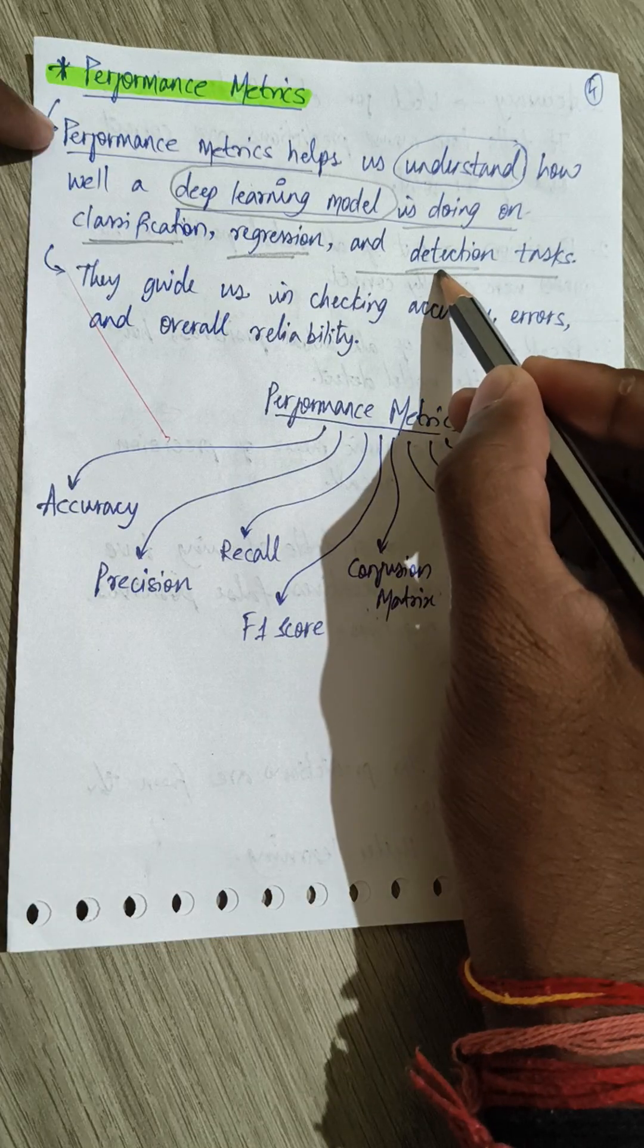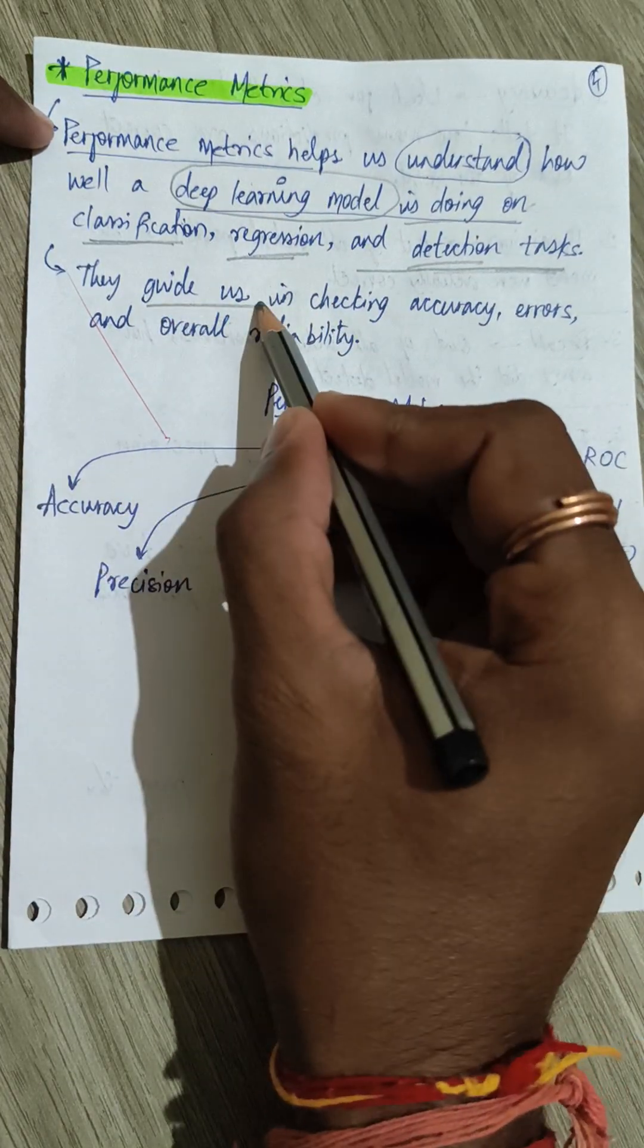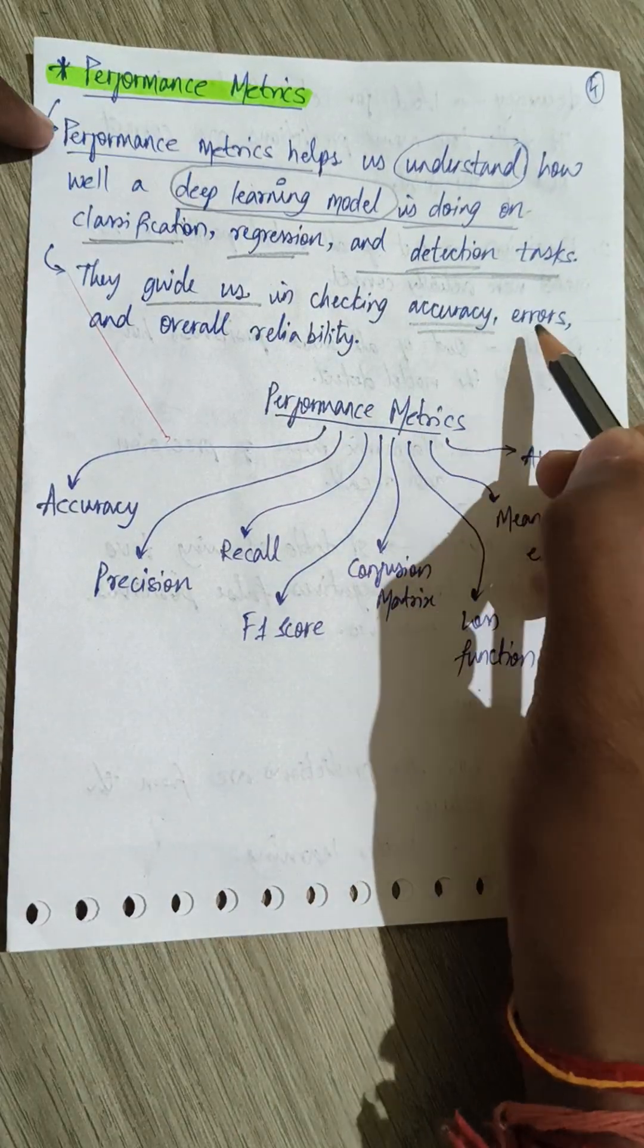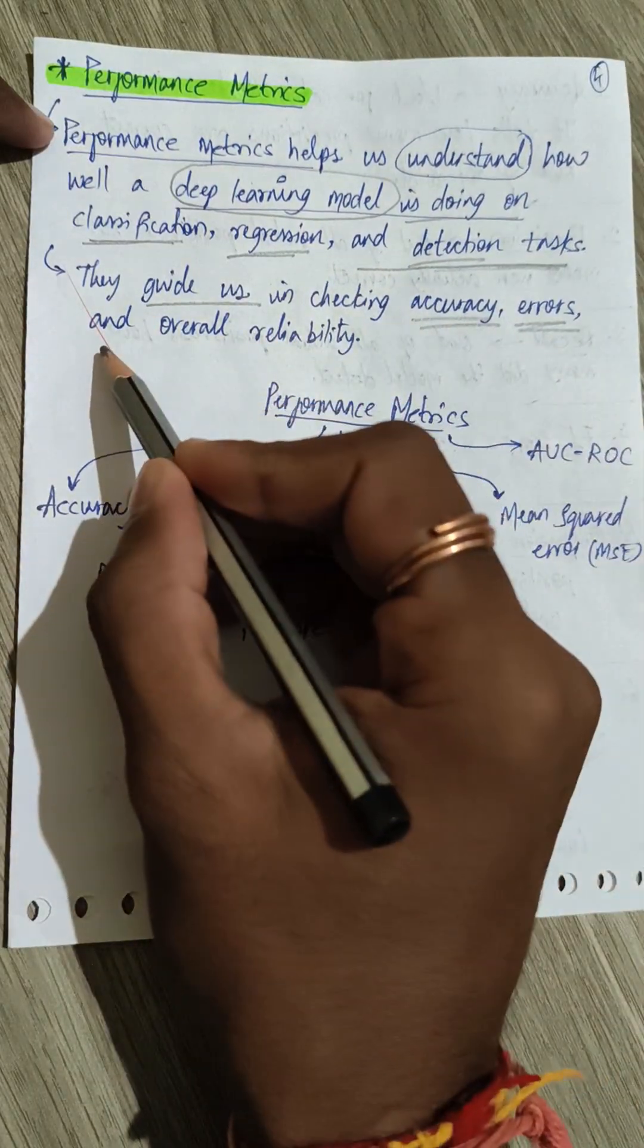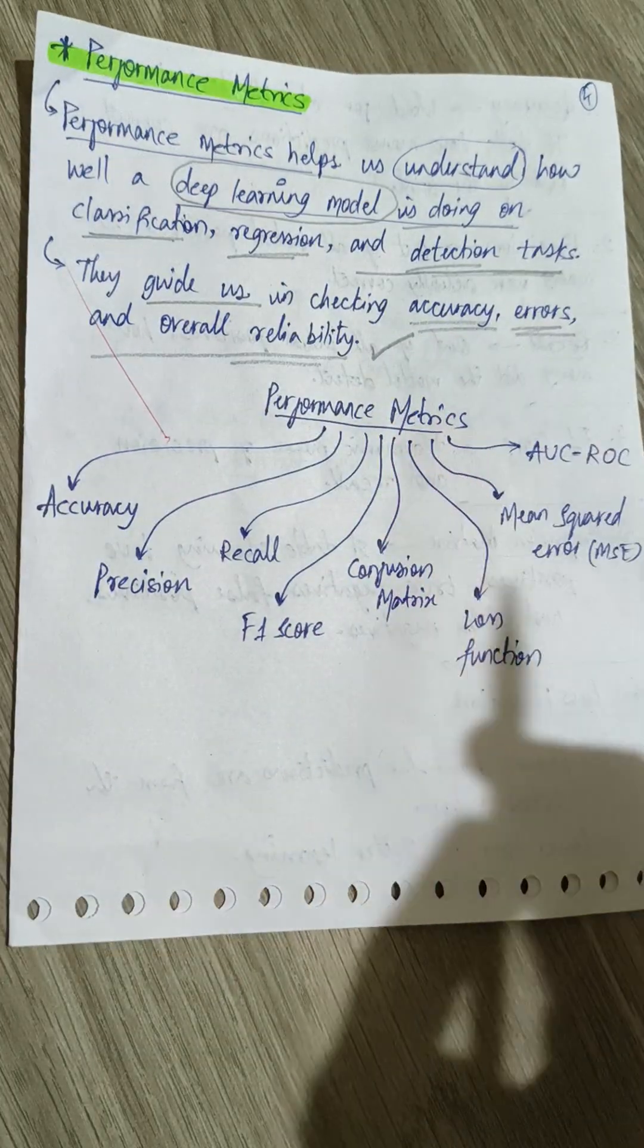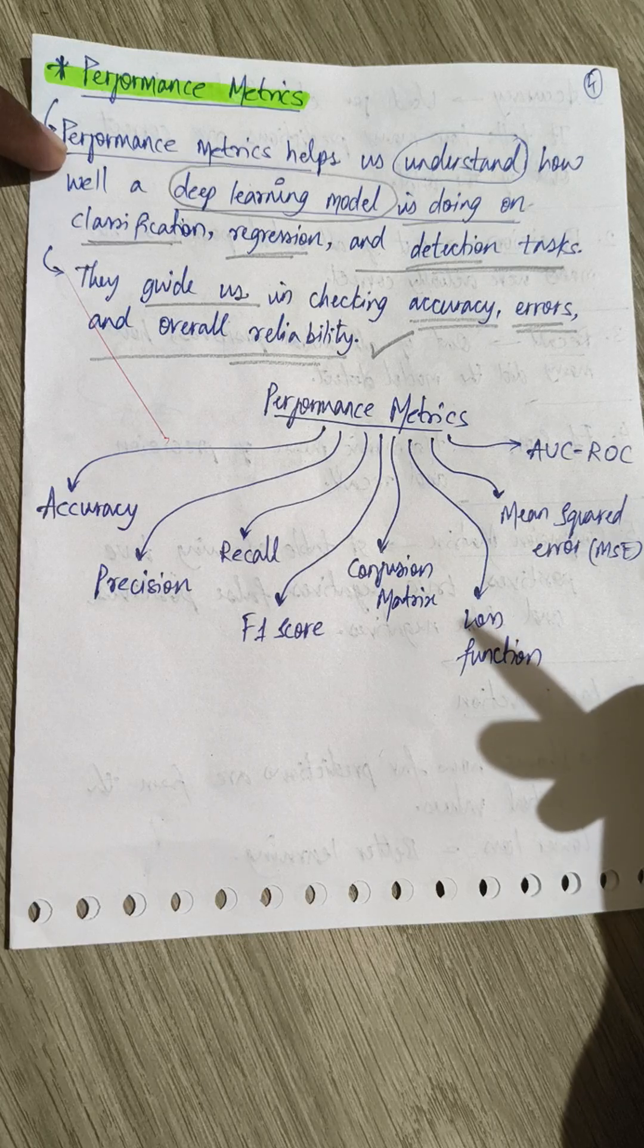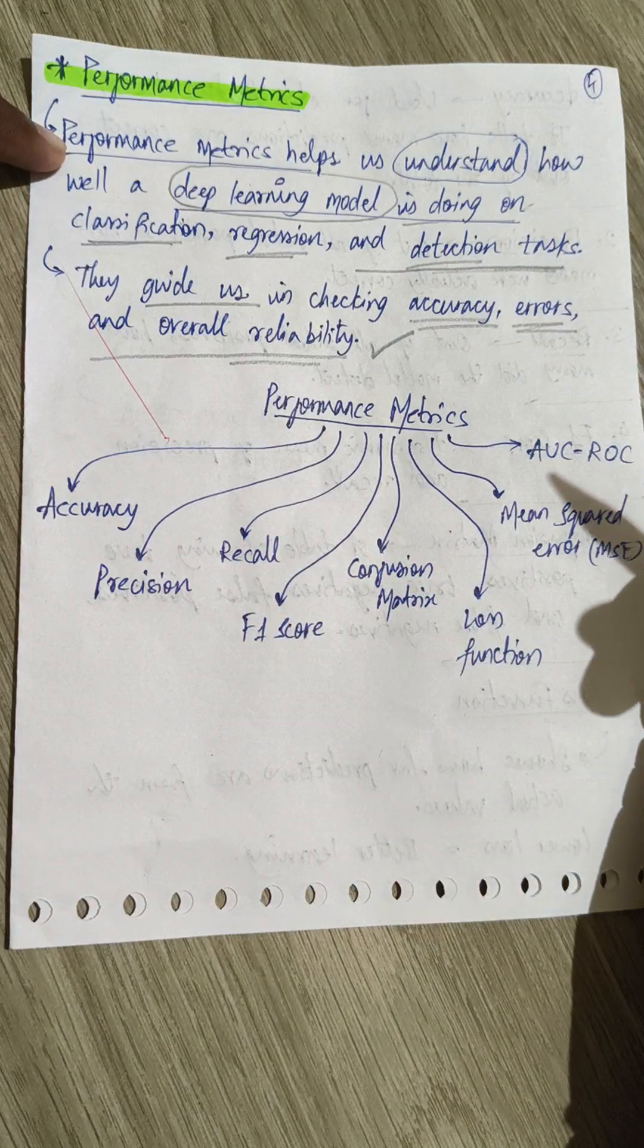Performance metrics generally guide us in checking the accuracy, the errors, and the overall reliability and compatibility of the model. We have different types of performance metrics for our deep learning model or machine learning model.